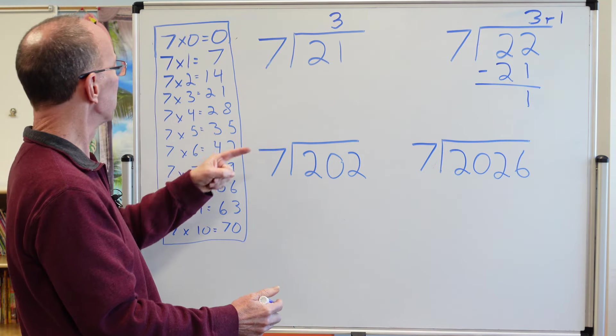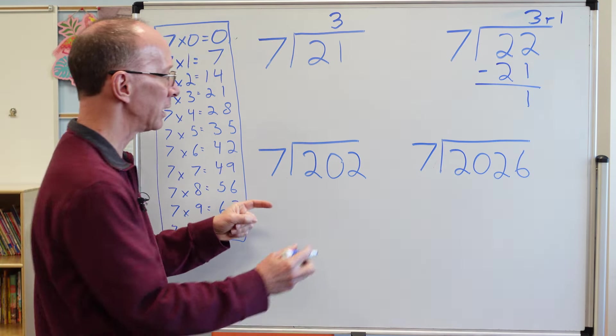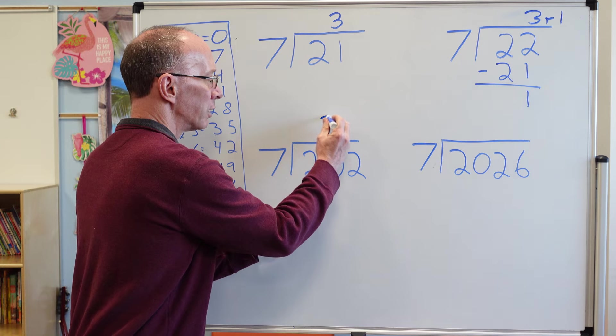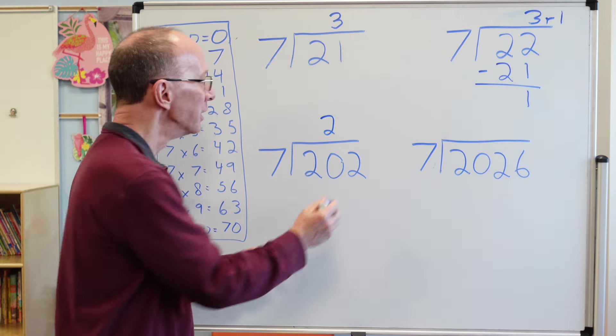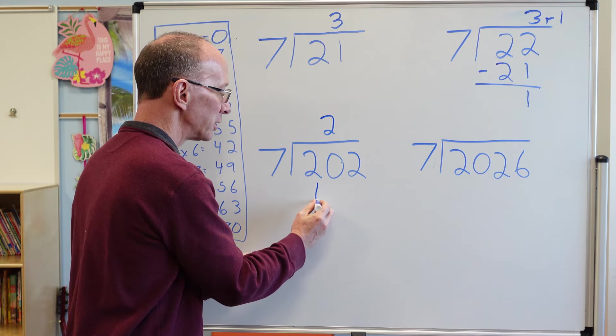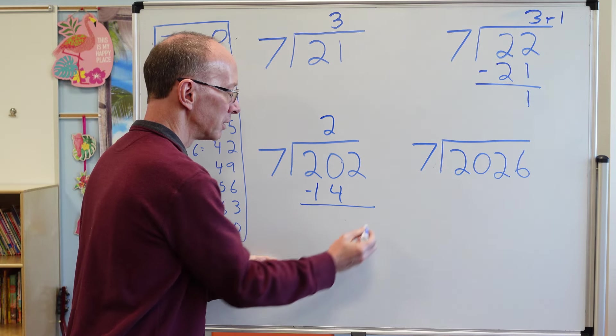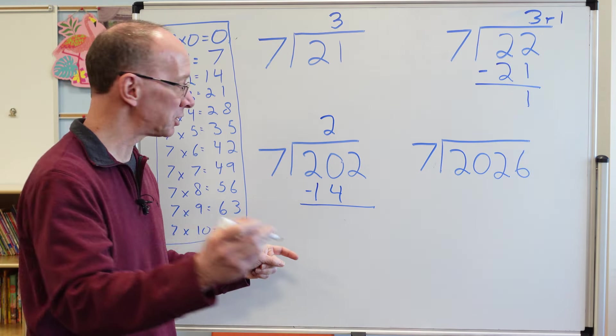How many times? Right here. Two times. So I put the two right here. Two times seven would be 14. Subtract. 20 minus 14? Six.